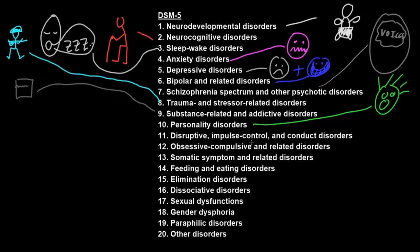Disruptive, impulse control, and conduct disorders involve distress or disability from behaviors that are unacceptably disruptive or impulsive for a person's culture. Obsessive-compulsive and related disorders involve distress or disability from obsessions or compulsions. Obsessions are thoughts that recur involuntarily and which are often unwelcome. Compulsions are activities that a person feels they must do and which are often related to an obsession. A common example is someone having an obsession that their hands are dirty and then a compulsion to wash their hands many more times a day than would be normal.